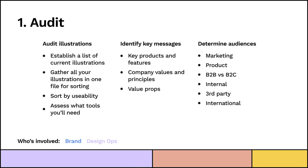Step one: Audit. The first step is to audit the illustrations you already have. If you don't have any illustrations, you don't need to do this step very much. But if you do have some — which most places have at least something, even if it's just iconography — you want to establish a list of what you currently have, because a lot of the time you'll realize there's stuff from five years ago hiding in a folder somewhere. Gather all of your illustrations into one file for sorting — I like to do that in Figma. Then sort by usability: if you have things from five years ago, are they still relevant? Sort into 'we might use this' or 'we're not going to use this.' And then assess what tools you're going to need — if you're doing a more watercolor-y style, perhaps you need Photoshop, and you want to establish that up front so when you hire your illustrator you know what kind of person you need.